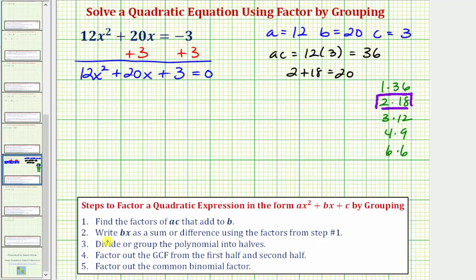So for step two, we're now going to write the bx term, or in this case the 20x term, as a sum or difference using the factors from step one, which means we're going to write 20x as 2x plus 18x. So on the left side we would have 12x squared plus 2x plus 18x plus 3 equals zero. Notice on the left side we do have an equivalent expression, because 2x plus 18x is equal to 20x. Now you might be asking would it be okay to write 18x plus 2x here, and the answer is yes, it would still work.